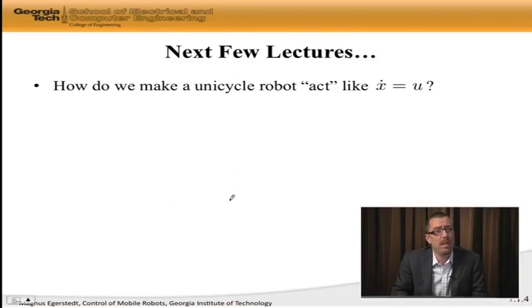So, what we're going to spend the next few lectures on is a very simple problem, which is, how do we make a unicycle robot, or a differential drive mobile robot, act like x dot is equal to u?